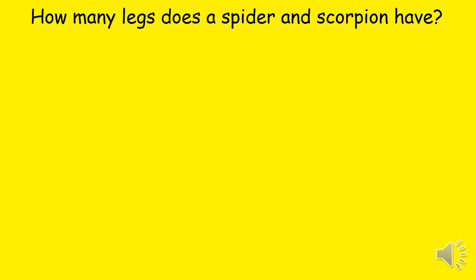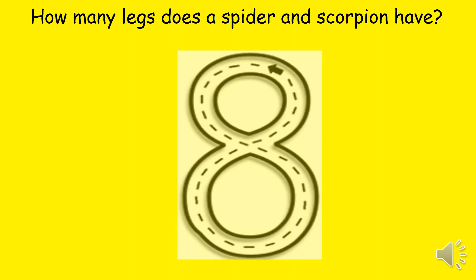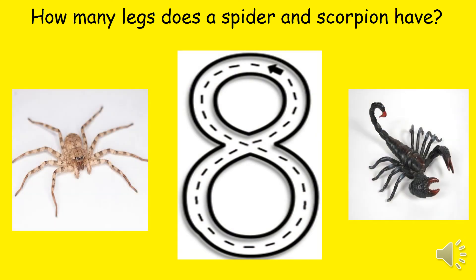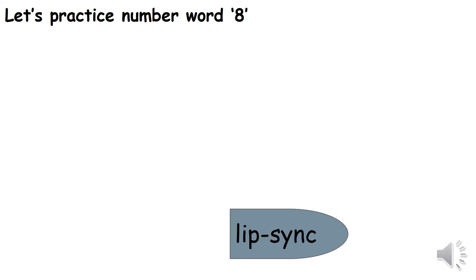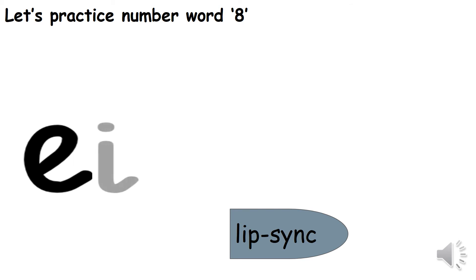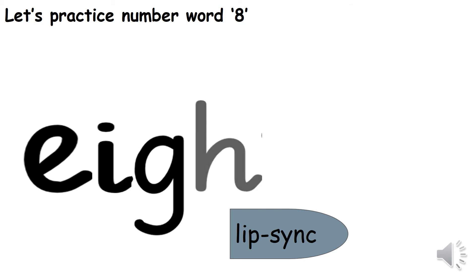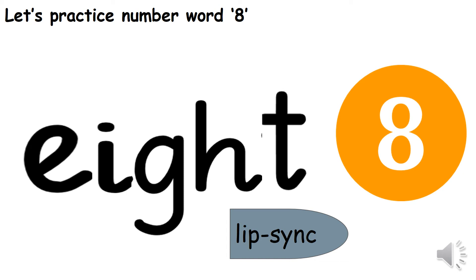Now think about how many legs does a spider and a scorpion have? Look at the pictures. A scorpion and a spider have eight legs. Now let's do the lip sync while learning the number name eight: E-I-G-H-T, 8. E-I-G-H-T, 8. Hope you have done the lip sync.